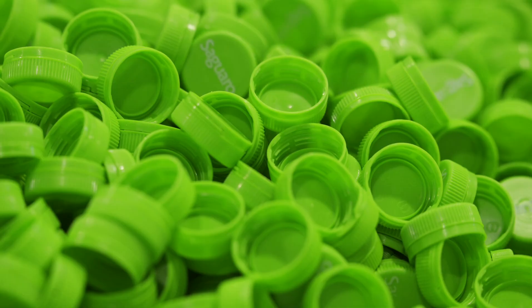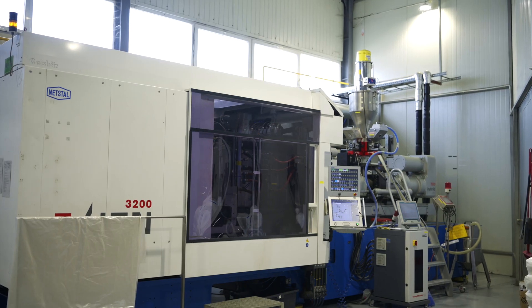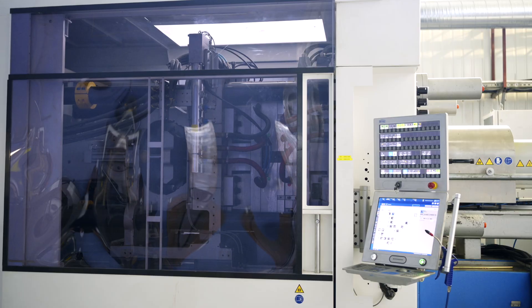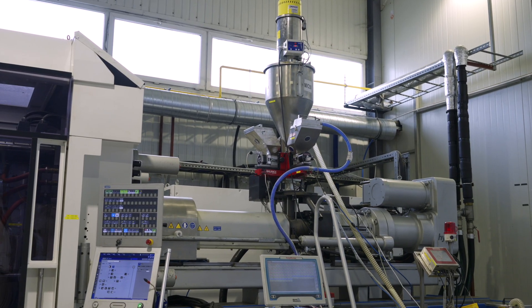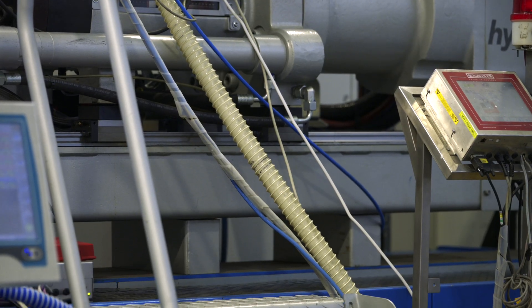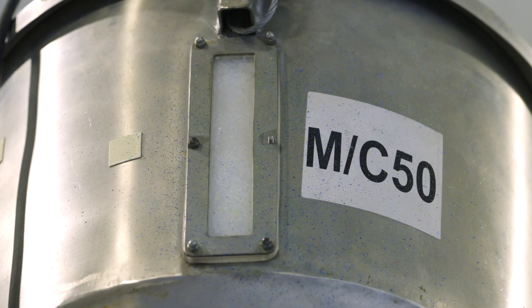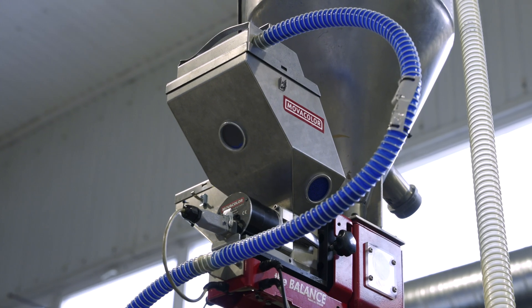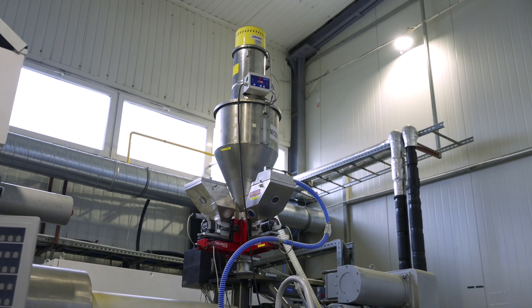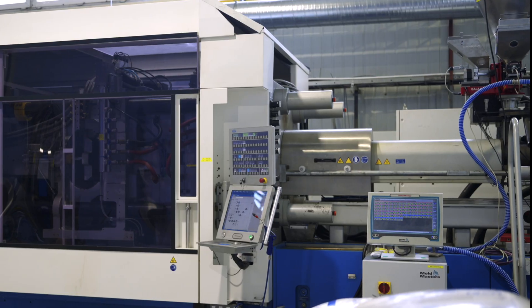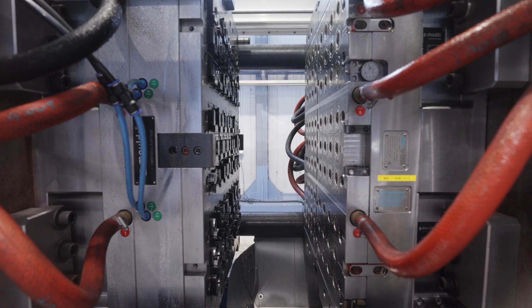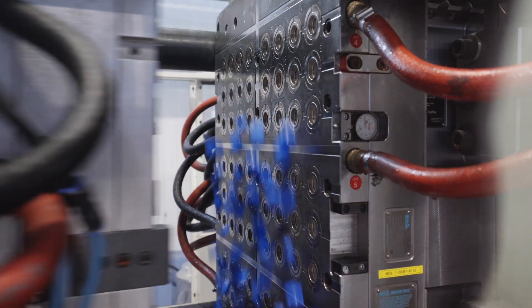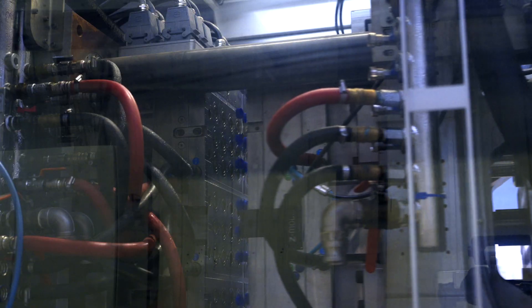Let's not forget about caps. Their production is performed in a very similar way as preforms and also takes place on injection machines. The only difference is that they are made of HDPE, high-density polyethylene. This material does not require initial drying and heating. It is directly transferred to the inlet of the plasticizing system, heated to 290 degrees Celsius, and mixed with pigments and other additives, for example, to increase slipperiness.